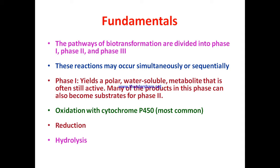The pathways of biotransformation are divided into phases one, two, and three. These reactions may occur simultaneously or sequentially. Phase one yields a polar, water-soluble metabolite that is often still active; many products of this phase also become substrates for phase two. Phase one reactions are of three types: oxidation with cytochrome P450 (the most common), reduction, and hydrolysis.